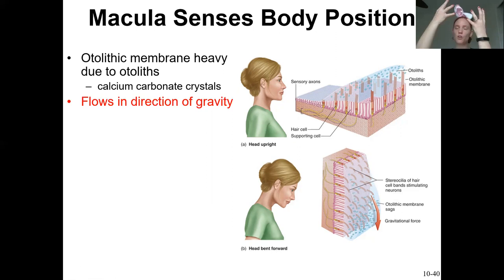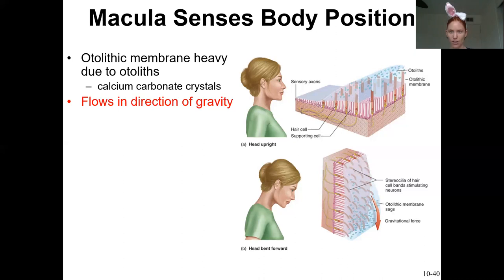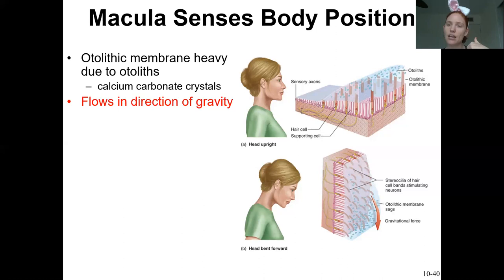This is how, even with your eyes closed or if you're hung upside down, you always know which way is down — you can sense gravity. It also activates in a car when you suddenly stop: the otolithic membrane continues to flow forward with momentum, bends the stereocilia, and that's how you can monitor linear changes in momentum like stopping, starting, or moving side to side. Both the utricle and saccule monitor gravity and linear changes in movement.